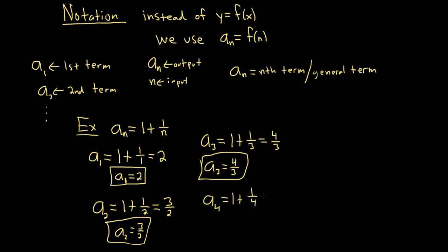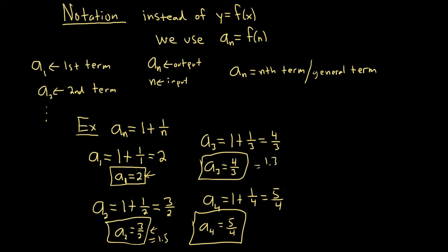Something interesting happens here. a_4 is 4/4 + 1/4 = 5/4. You can see the numbers appear to be getting closer and closer to 1. We have 2, then 3/2 which is 1.5, then 4/3 which is about 1.33, then 5/4 which is 1.25. So the further you go, the closer you get to 1.